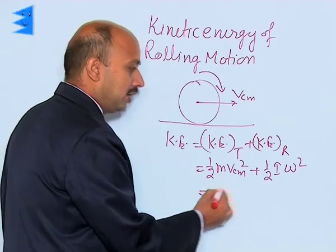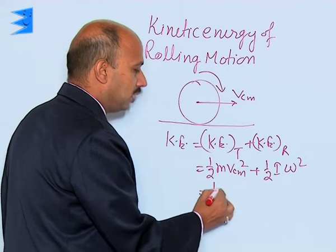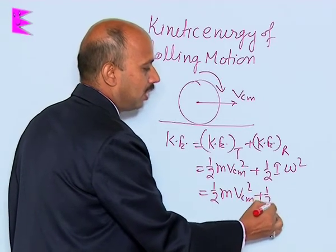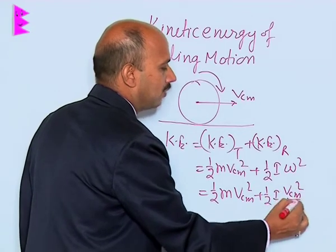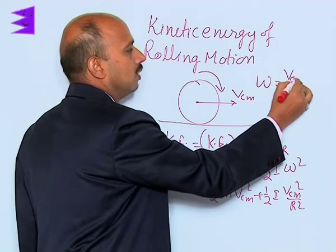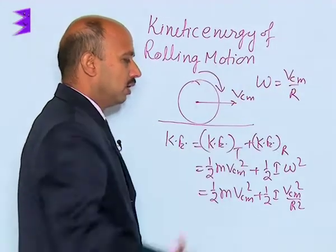Now we can write omega we can change. So that is here half m v_cm squared plus half I v_cm squared divided by R squared, because here omega is equal to v_cm upon R.